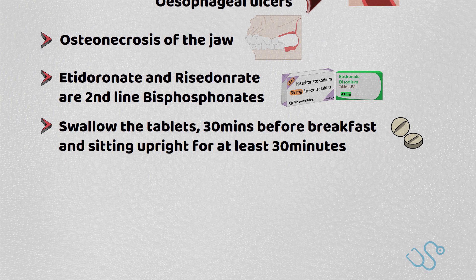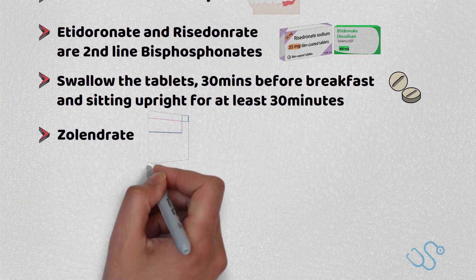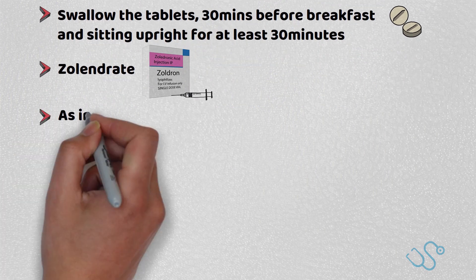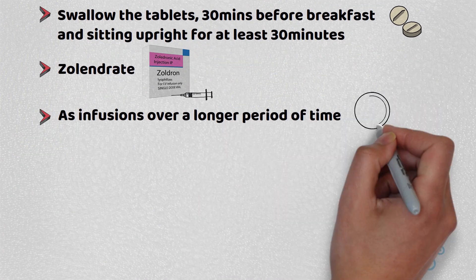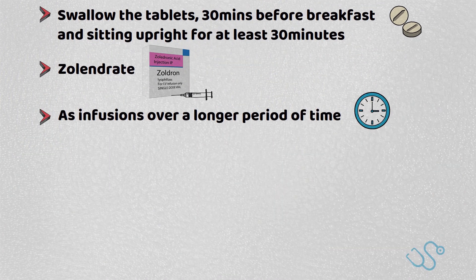Etidronate and risedronate are second-line bisphosphonates if alendronate is not tolerated, but may cause similar side effects. There are some forms of bisphosphonates, such as zoledronate, which are given as infusions over a longer period of time, which some patients may benefit from.